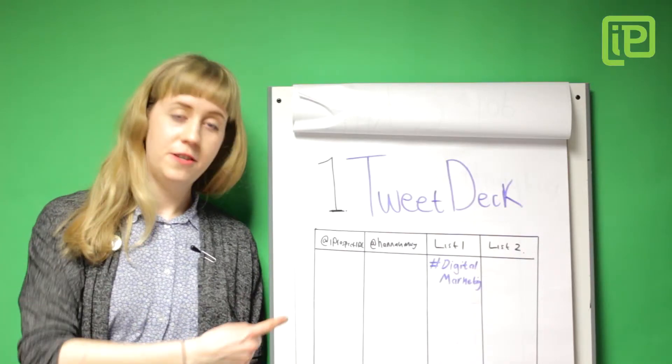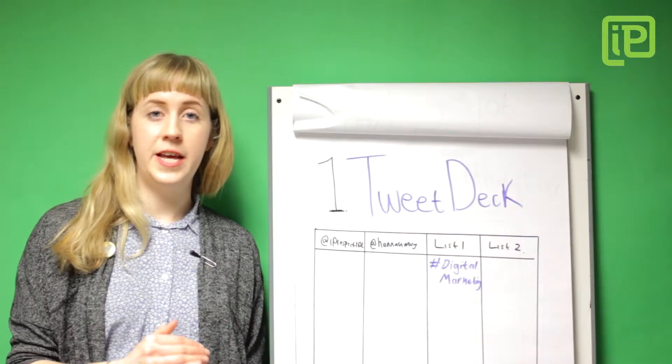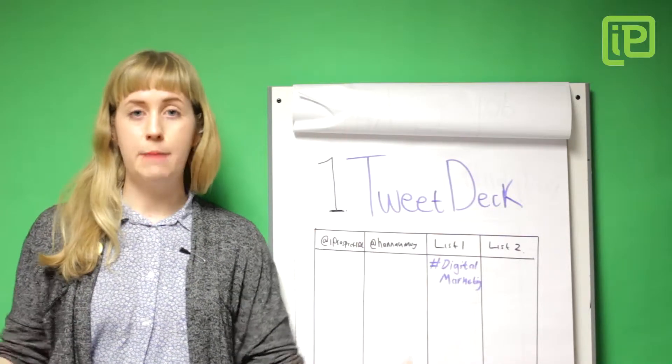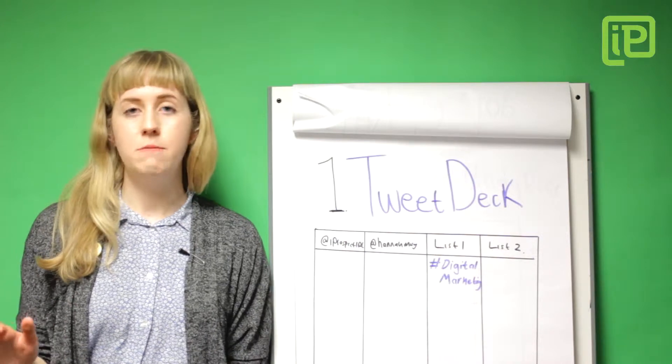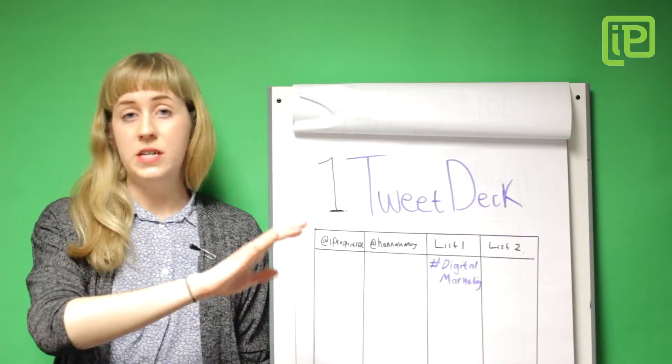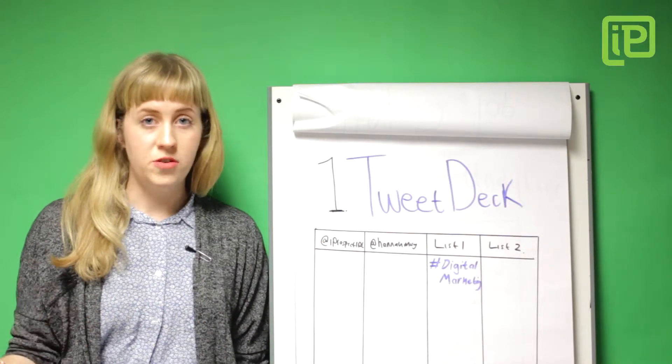Number one is TweetDeck. So TweetDeck is a Twitter dashboard which is owned by Twitter itself and you can access it on TweetDeck.com. What I love about TweetDeck is it gives you a whole bird's eye view and a really good snapshot of what's going on on Twitter at any time. You can create customized streams and lists involving whatever you want to follow or you're interested in.